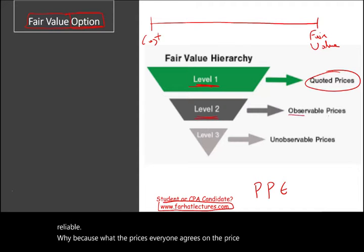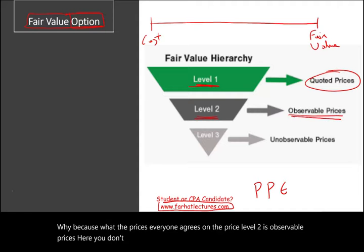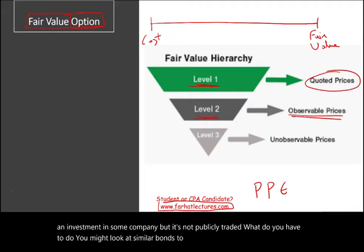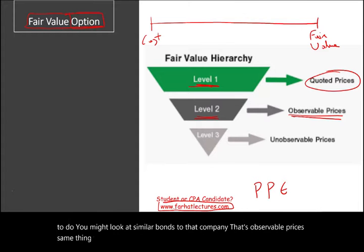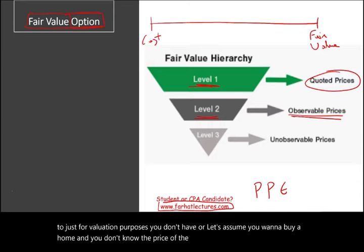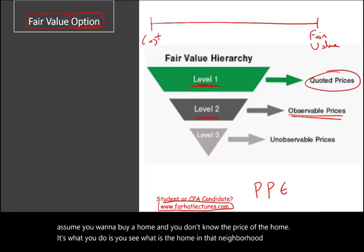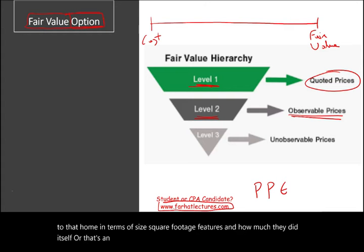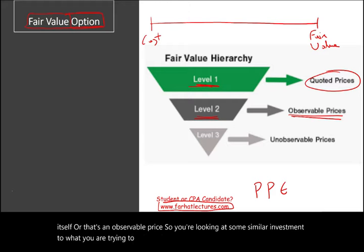Level two is observable prices. Here, you don't have quoted prices. For example, you might have a bond or an investment in some company where it's not publicly traded. Well, you might look at similar bonds for that company — that's observable prices. Same thing if you have a building and you want to value it: you see what a similar home in that neighborhood sold for, in terms of size, square footage, and features. That's an observable price — you're looking at a similar investment to what you are trying to value. This is called observable prices, and this is level two.